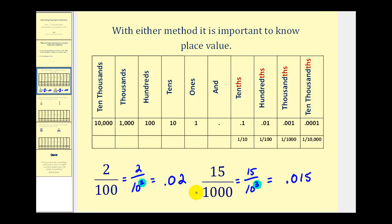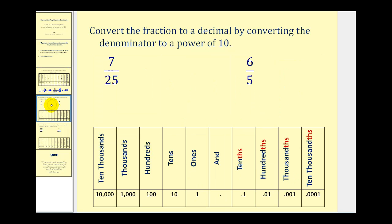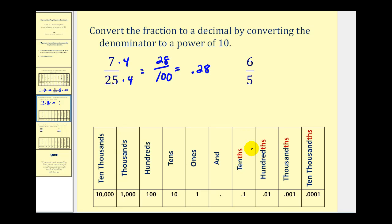Now let's take a look at what happens when the denominator is not given as a power of ten. Here we have seven twenty-fifths, or seven over twenty-five. We need to ask ourselves what can we multiply twenty-five by to convert our denominator to a power of ten. Well, twenty-five times four would give us one hundred, which is a power of ten. And we can do this as long as we do the same to the numerator. So the equivalent fraction would be twenty-eight over one hundred, or twenty-eight hundredths. If we know our place value, we know this would have to be .28 — tenths and then hundredths, two digits to the right of the decimal.